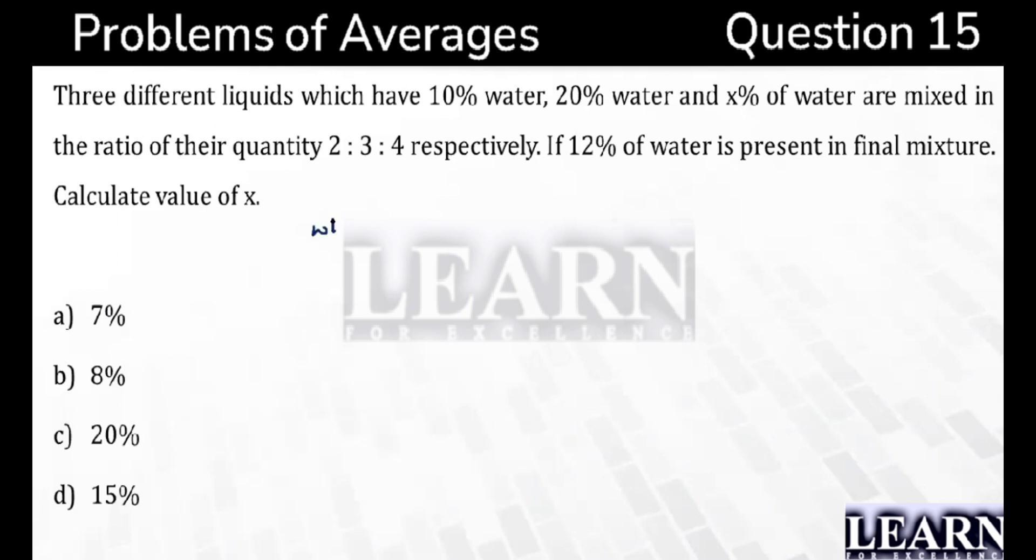If you want to find out the weighted average, the weighted average formula says N1A1 plus N2A2 plus N3A3 since we have three terms divided by N1 plus N2 plus N3, where N1 is the total quantity and A1 is the percentage or average.